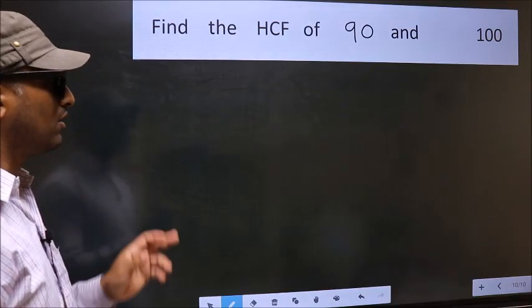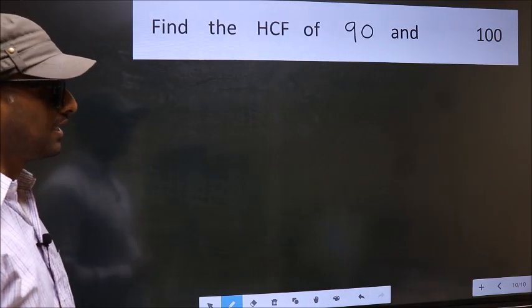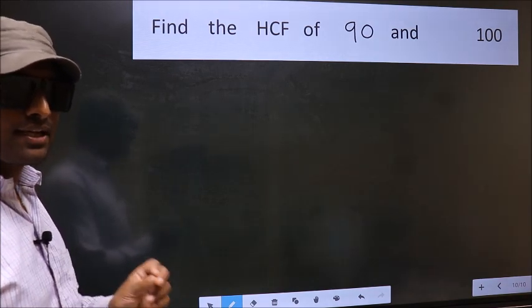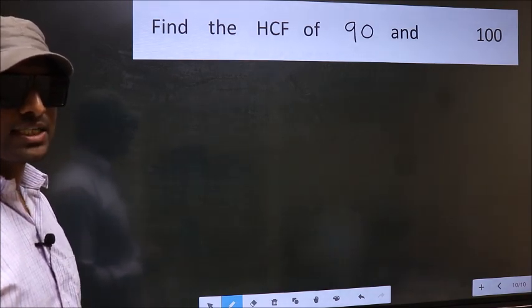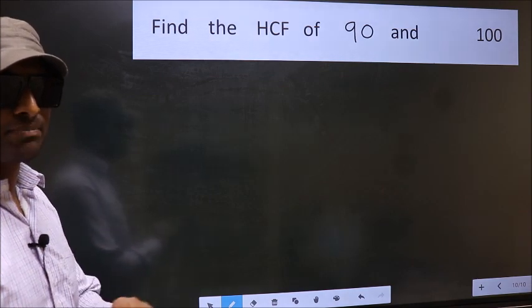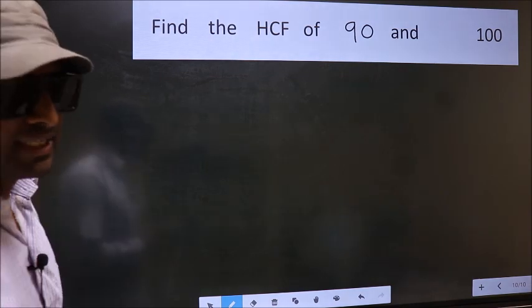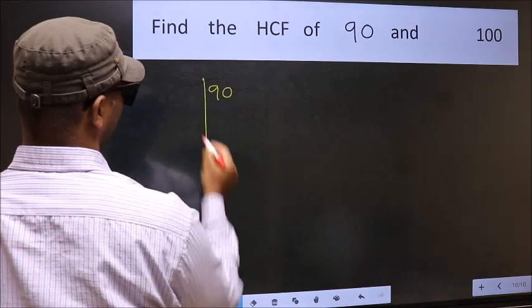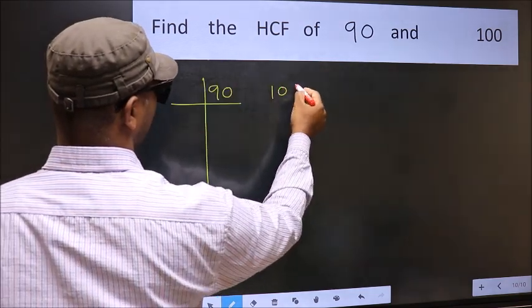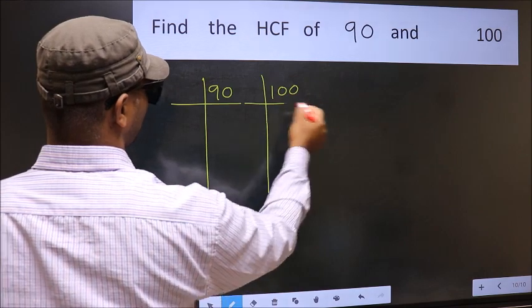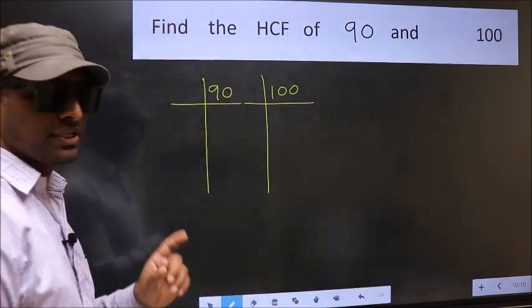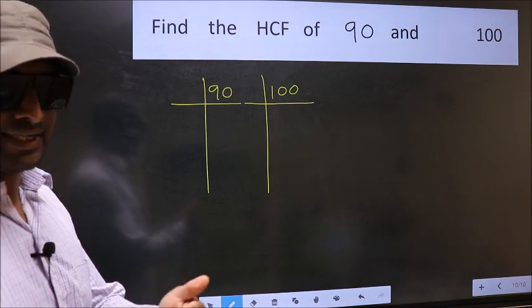Find the HCF of 90 and 100. To find the HCF, we should do the prime factorization of each number separately. What I mean is 90 and 100. This is your step 1. Next.